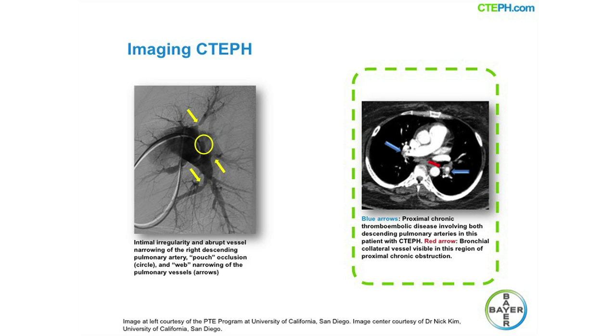As a matter of course, if interpretive questions should arise, contact an experienced CTEPH center for assistance. Like CTPA, contrast-enhanced magnetic resonance angiography can be used to assess pulmonary arteries down to the segmental and sub-segmental level. MR imaging also offers the possibility of assessing mean pulmonary arterial pressure, pulmonary vascular resistance, and other hemodynamic parameters non-invasively. However, the technique has yet to be widely adopted, apart from select centers that have the requisite experience and expertise using it.